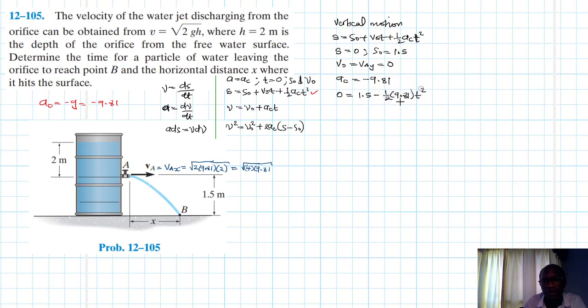This becomes 4.905 t squared equal to 1.5. Therefore t is just going to be equal to plus or minus, no minus, we don't have minus time, therefore we just concentrate on the positive value, so 1.5 divided by 4.905.